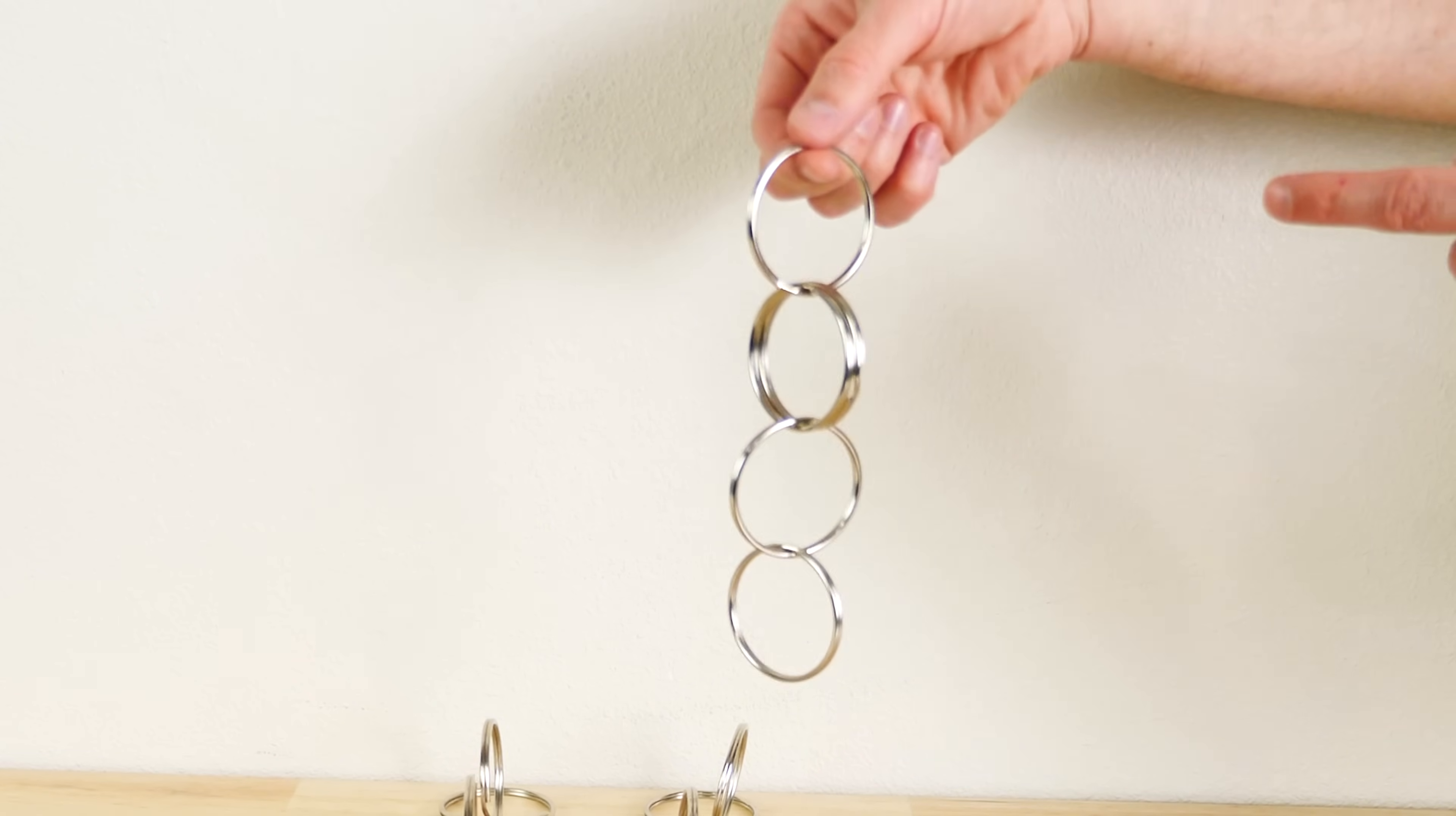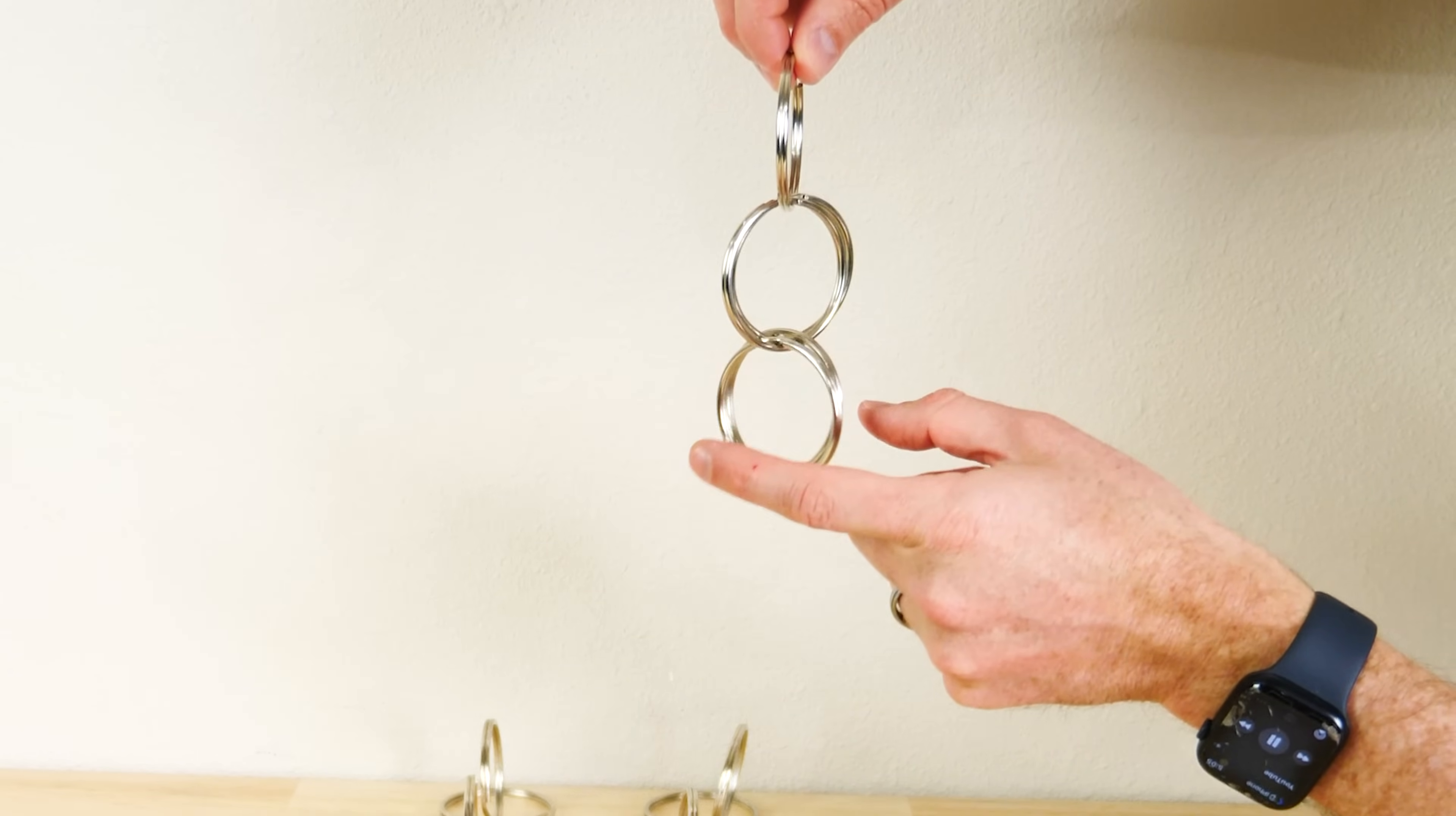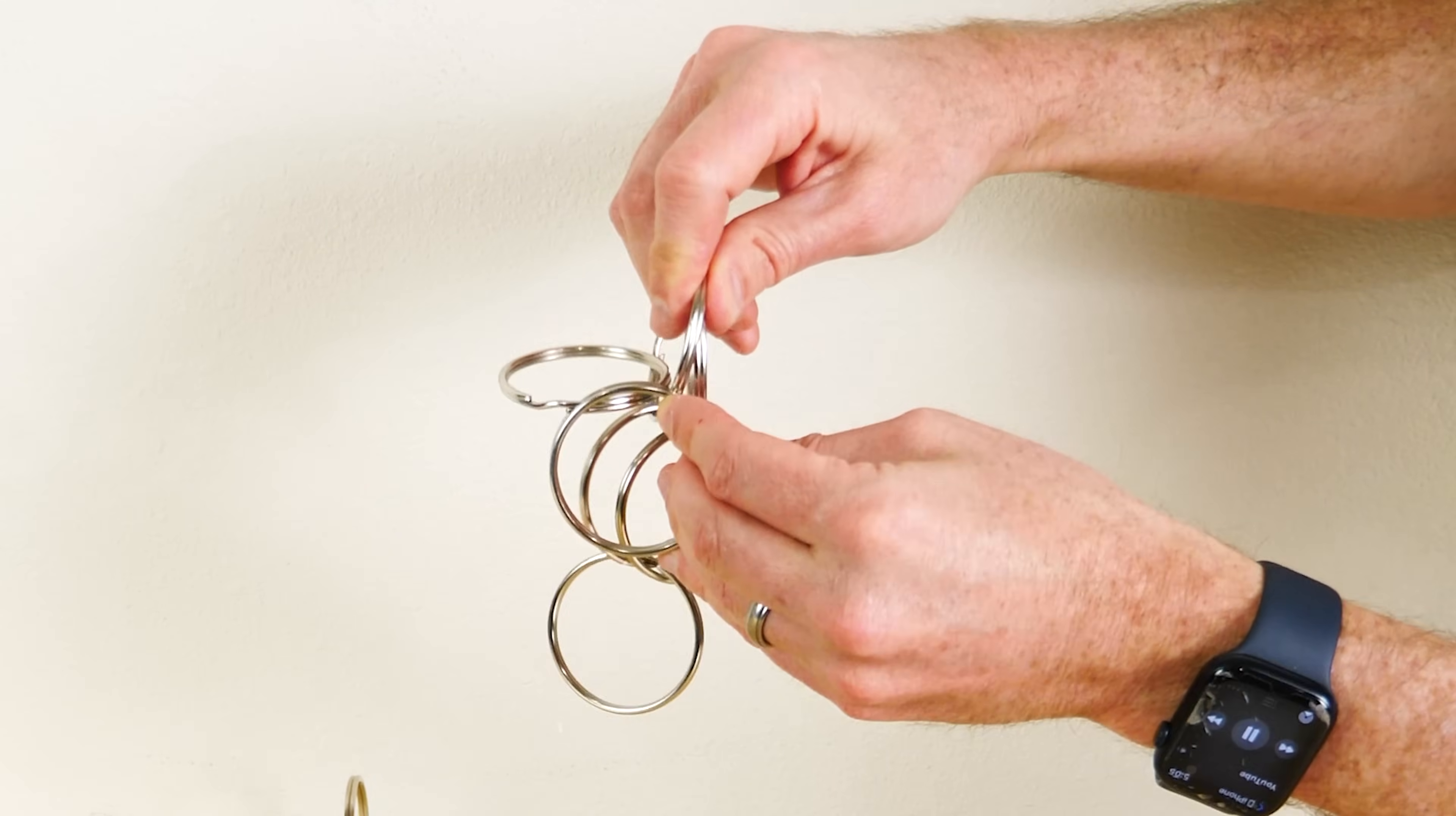Now what you're going to do is you're going to hold the top ring like this between your thumb and pointer finger. And then you're going to grab with your left hand one of these rings on the side. And you're going to let the top ring drop now. So now you have one, two, two. Then you're going to take these two at the bottom and you're going to grab another ring set.